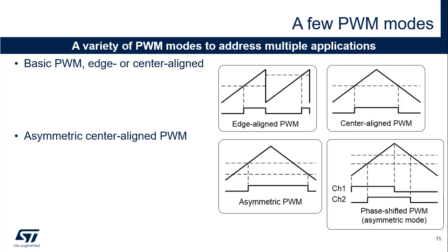A variant of the center aligned mode is the asymmetric PWM mode where two compare registers define the turning on and off of the PWM signal. This provides higher resolution for pulse width setting since turn on and turn off times are individually defined. It also allows the generation of phase shifted PWM signals necessary to drive DC-DC converters based on the full bridge phase shifted topology. The timer provides two PWM signals with identical frequency, 50% duty cycle, and a phase shift varying from 0 to 180 degrees.